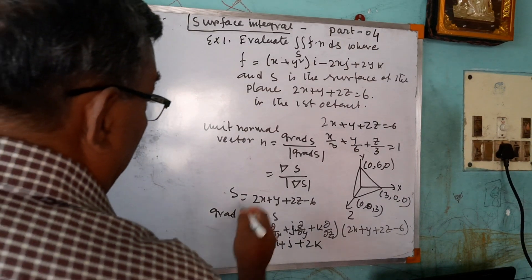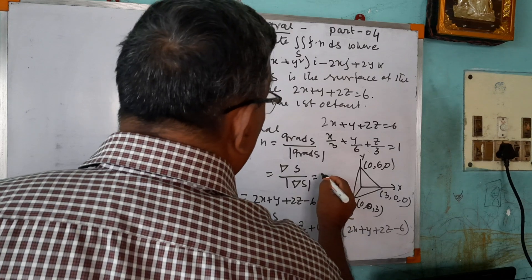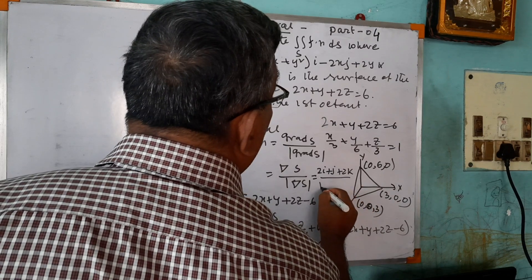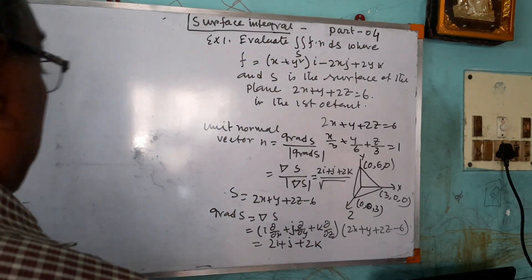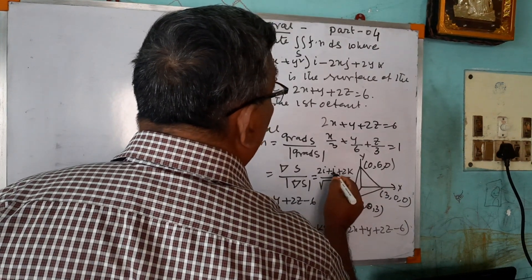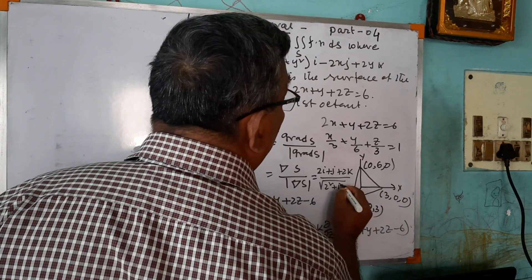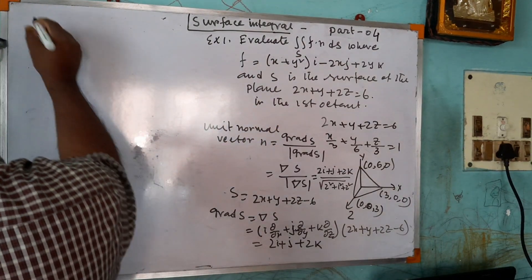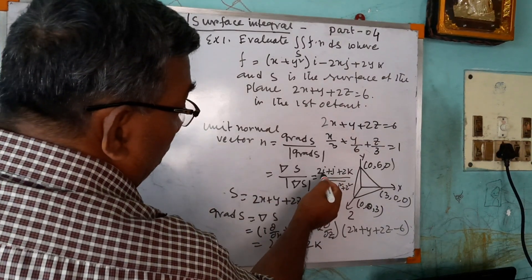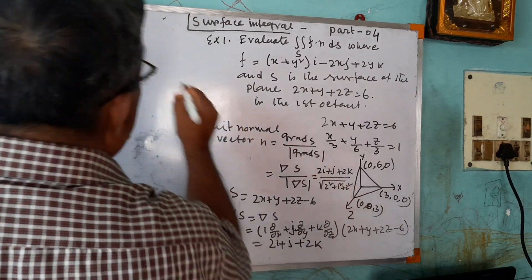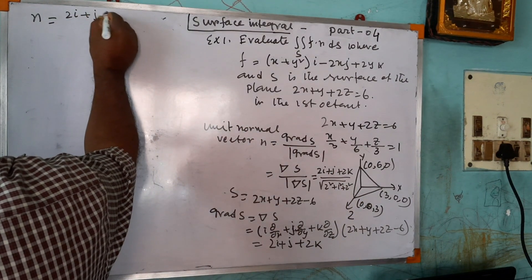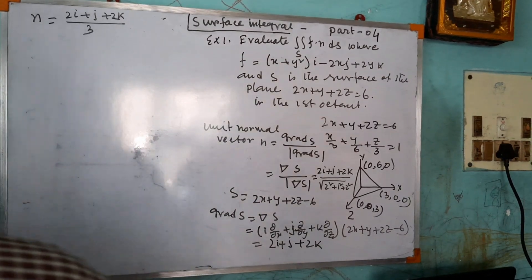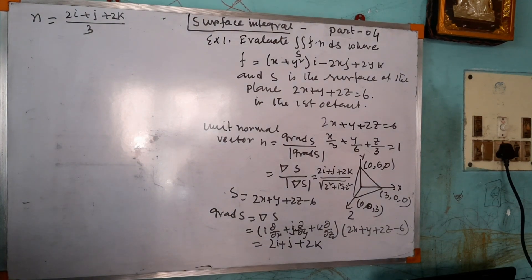Now what is n̂? That is ∇s divided by |∇s|. We have ∇s = 2i + j + 2k, and |∇s| = √(2² + 1² + 2²) = √9 = 3. Therefore n̂ = (2i + j + 2k) / 3. This is your unit normal vector.